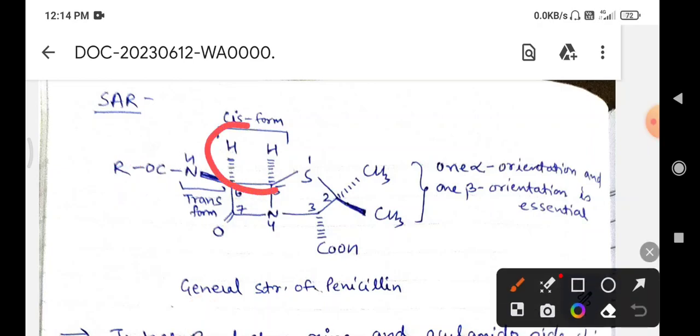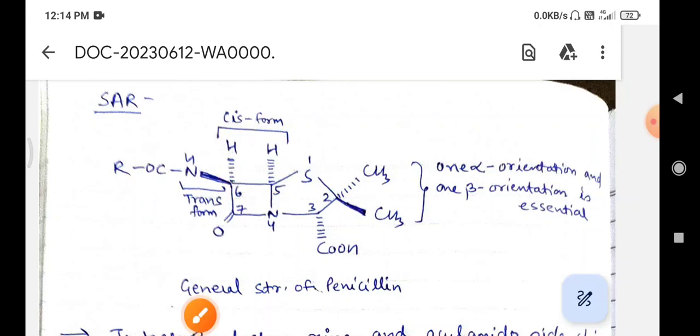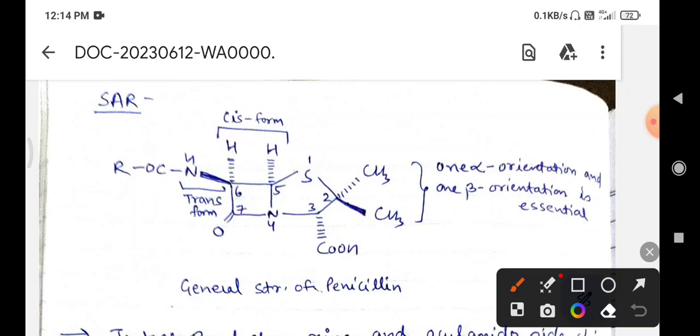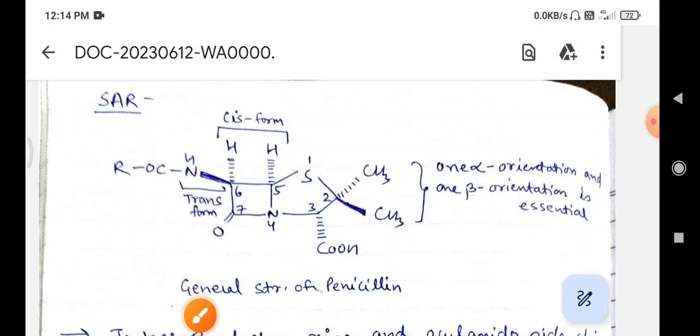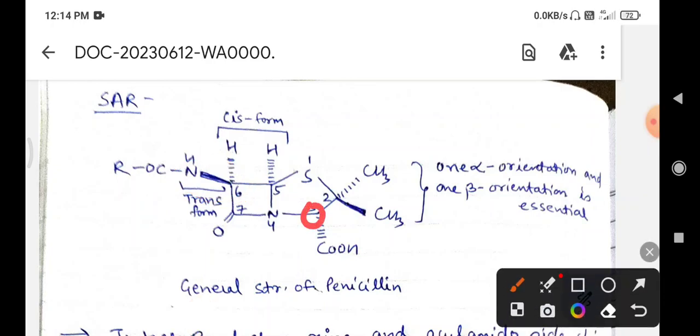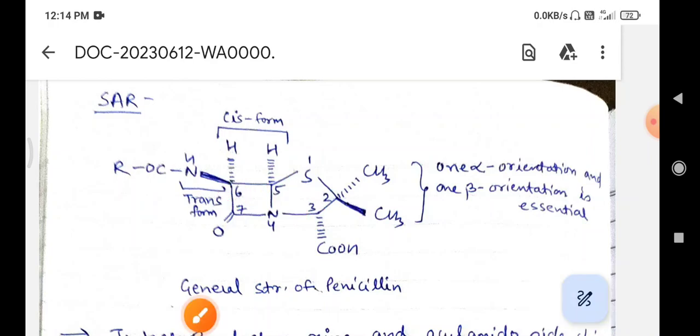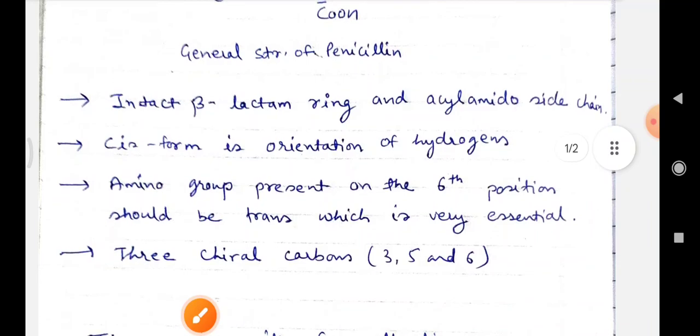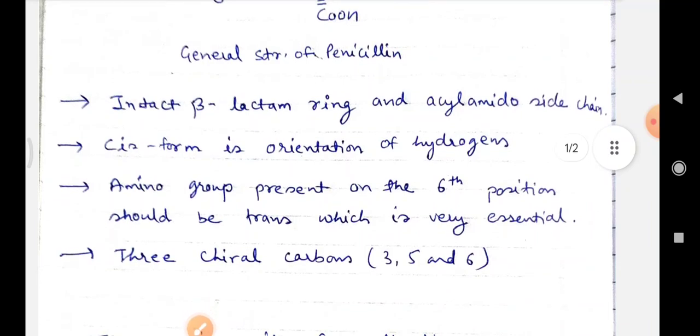The cis-form orientations of hydrogen is essential. The amino group present on the 6th position should be trans which is essential. The general structure have three caryl carbons at carbon number 3, carbon number 5, and carbon number 6. These are various important points which are essential for the antibacterial activity of the penicillin.